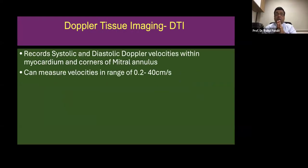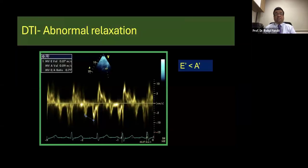Now for this to be more firm about your diagnosis, you could record systolic and diastolic Doppler velocities within the myocardium or on the corner of the mitral annulus. And these velocities can range between 0.2 to 40 centimeters per second. So you've got a wide range to look at these velocities and they will make you understand better what a normal or a pseudonormal or a restrictive pattern is.